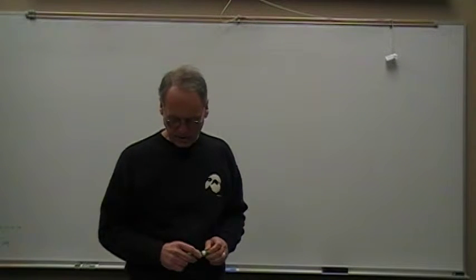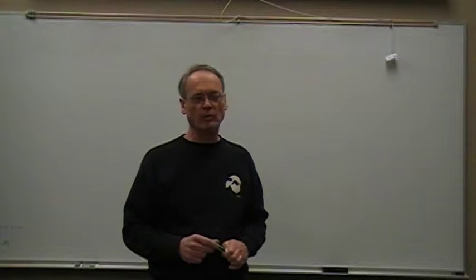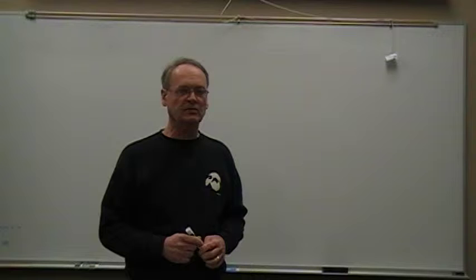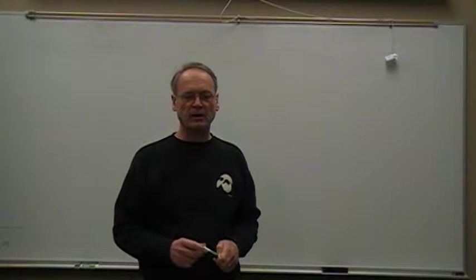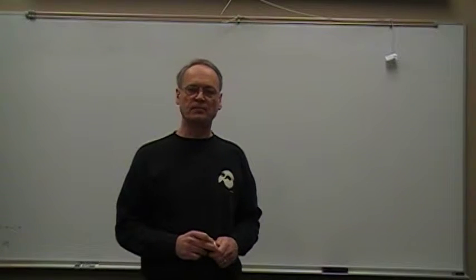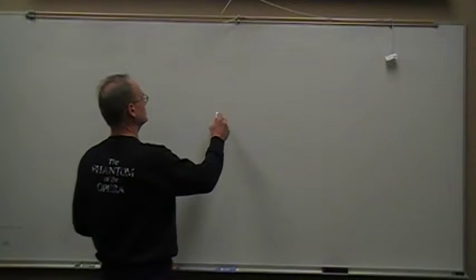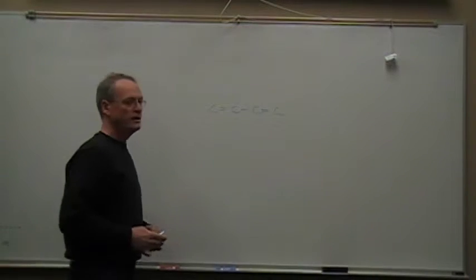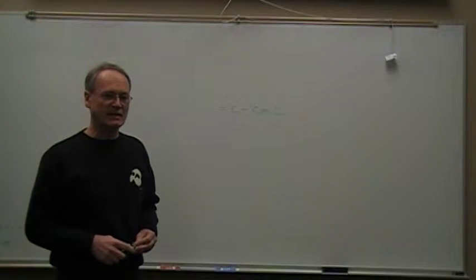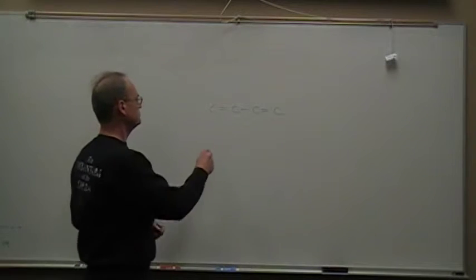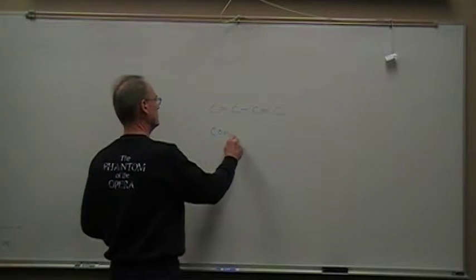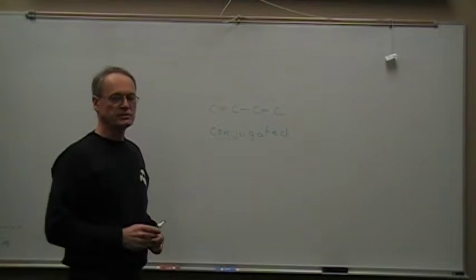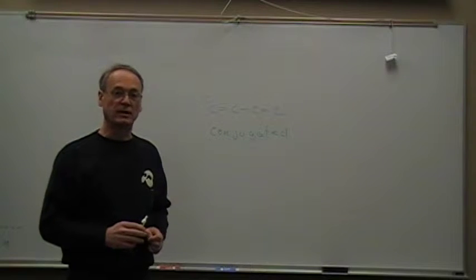Let's start with double bonds. That's where we're mostly going to be dealing in this chapter — dienes, two double bonds that are conjugated with each other. Are all dienes conjugated? No. If you have the situation of double-single-double, that kind of diene is called conjugated. We'll see why in a few minutes. But there are a couple of other kinds of dienes that we won't be dealing with in this chapter because they're not conjugated.